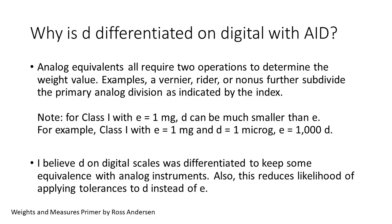High-resolution instruments prompt us to ask three questions. First: why differentiate the least significant digit on the digital scale? Notice that the analog equivalents require two operations to determine a weight value. First, you read the primary scale corresponding to the index. Second, you further subdivide the primary scale division using the Vernier or Rider. In the special case of class 1 with E equal 1 milligram, D can be very much smaller than E—in the example here, D is 1/1,000th of an E. The differentiated D on digital instruments is not the result of a second operation. I believe R76 differentiated it to maintain some equivalence to analog technology. It also reduces the likelihood of misapplying the tolerance to D.